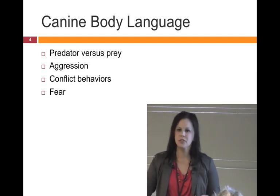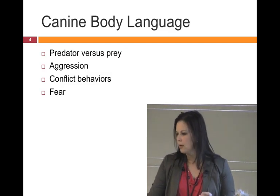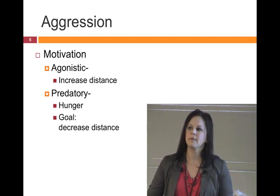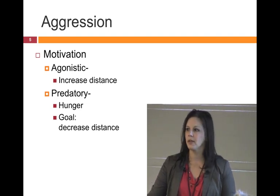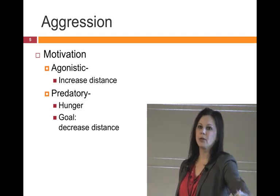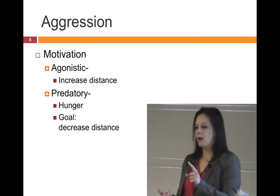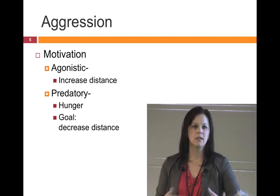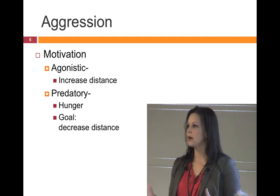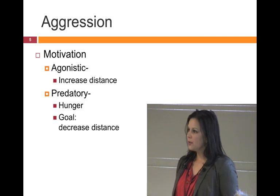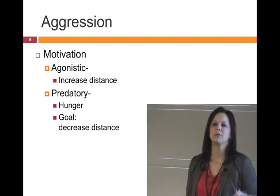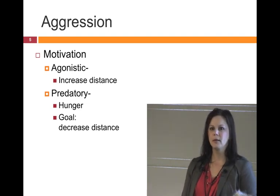We're also going to talk about aggression, conflict behaviors, and fear, including predatory behavior. Most aggressions we see are motivated from an agonistic point — a fancy word that means distance increasing. The goal is to increase the distance between the animal and whatever the threat is. Fear aggression, territorial aggression — those are all based on trying to get something to move farther away. Predatory behavior, on the other hand, has a very different motivation: hunger. It's actually a distance-decreasing behavior — you want to get closer to your prey — so it's on a different spectrum.